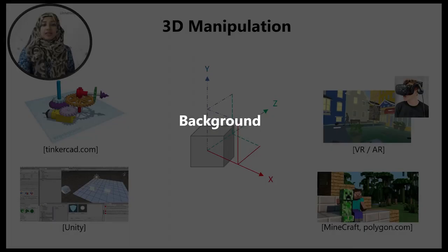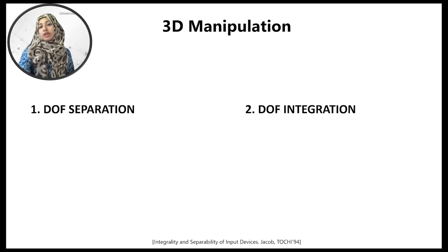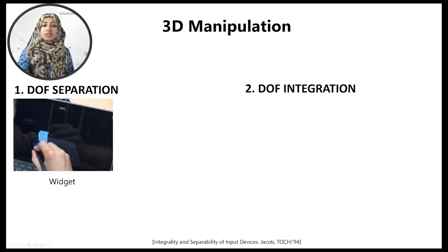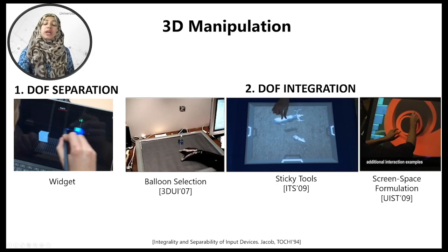3D manipulation is a fundamental task in 3D design and development, involved in 3D model design as well as content for head-mounted VR and AR displays. There are two families of techniques for the manipulation of 3D objects: techniques based on separation of degrees of freedom, and techniques based on integration of degrees of freedom. Integration is when you control multiple dimensions at once, which can more closely match higher-dimensional 3D manipulation tasks.